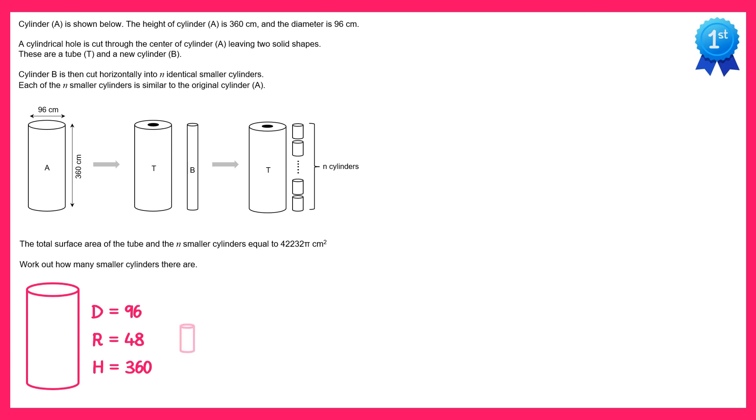Now let's look at each of the smaller cylinders. We're also going to need their diameter, radius and height. Before cylinder B was chopped into the n smaller cylinders it was the same total height as cylinder A. So if it was the same height, 360, and chopped into n cylinders, this means each of the smaller cylinders will have the height 360 divided by n. Since the smaller and larger cylinder are both similar, we would also divide the radius by n and the diameter by n. So the diameter is 96 over n and the radius is 48 over n.